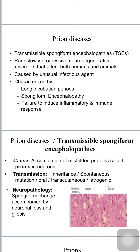Prion diseases are caused by accumulation of misfolded protein called prions in neurons. They are transmitted in three ways: inherited via germline mutations, spontaneous mutations, or acquired by ingestion, transcutaneously by cuts in the skin, or iatrogenically by medical and surgical procedures.